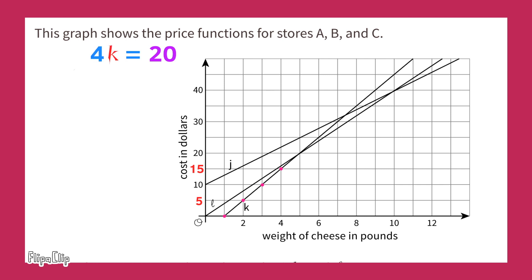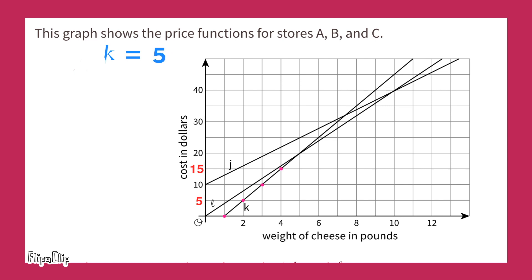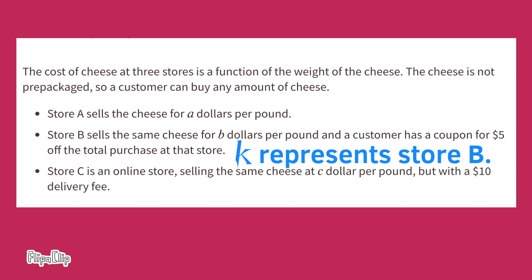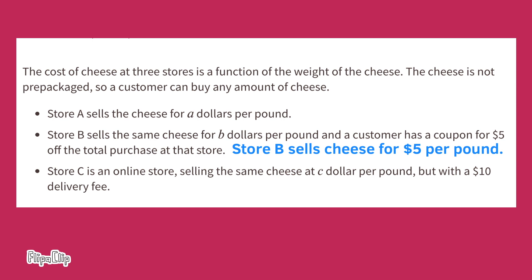Now it's a one-step equation. All we have to do is divide both sides by four. Four K divided by four equals K, and twenty divided by four equals five. So K equals five. Line K represents Store B, which sells cheese for five dollars per pound.